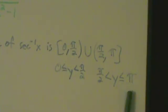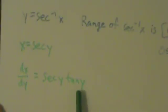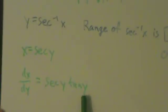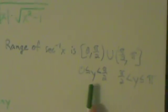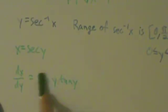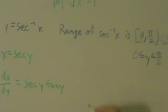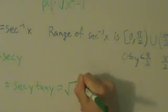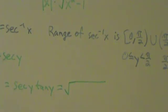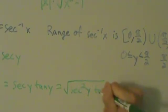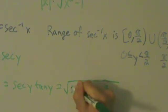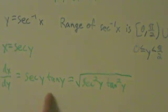No matter what y is, as long as it's in this valid range, secant y times tangent y is always 0 or positive. Because of that, we can say secant y tangent y equals the square root of secant squared y times tangent squared y. We can do that because this product is always non-negative — if it were ever negative, like negative 2, the square root of its square would give positive 2, not negative 2.